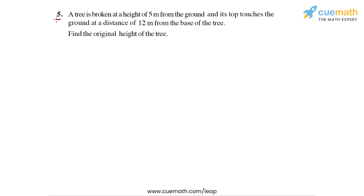Question 5 of this exercise says: a tree is broken at a height of 5 meters from the ground and its top touches the ground at a distance of 12 meters from the base of the tree. We have to find the original height of the tree.